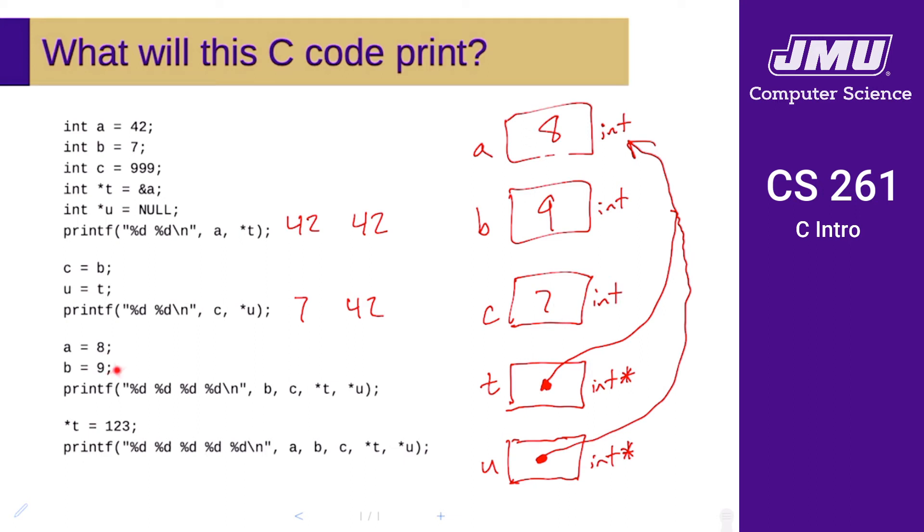However, we have two pointers to a, and so both of them now, if we read through them, are going to be pointing to this new value. When we run this print statement and we print b, we're going to get nine. When we print c, we're going to get seven. But both star t and star u are going to give us eight, because they're both just pointers to a. Whenever we change a, we will have access to that new value through both t and u.